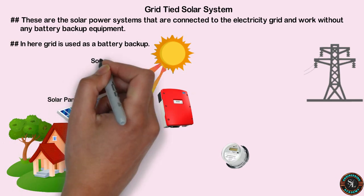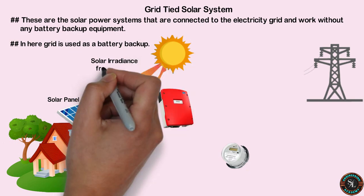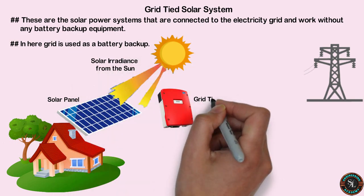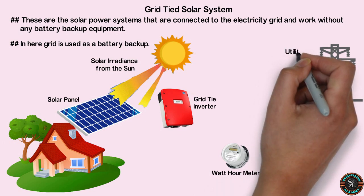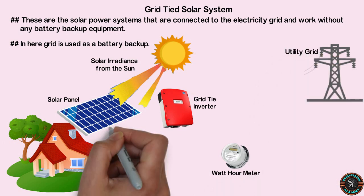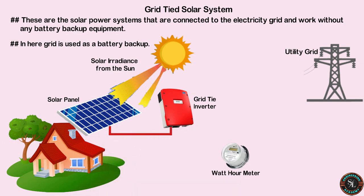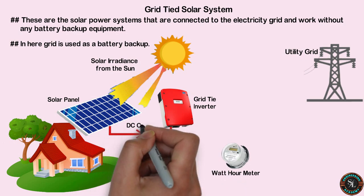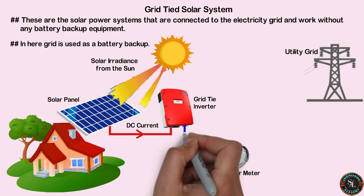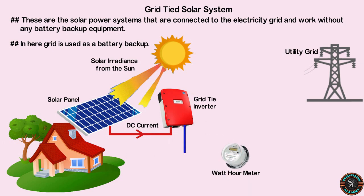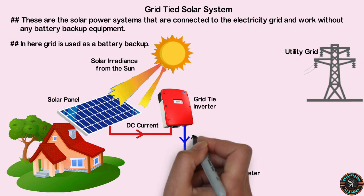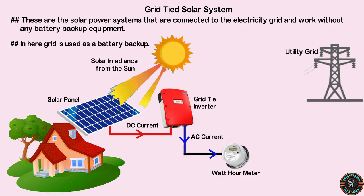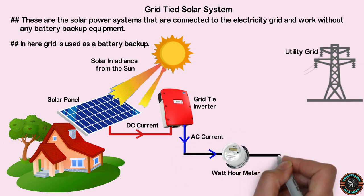In the diagram we have: solar panel, solar irradiance from the sun, a grid-tie inverter, a watt-hour meter, and the utility grid. The solar panel generates DC current, which goes to the grid-tie inverter. The inverter converts the DC current into 230 VAC current, and then it goes to the grid.